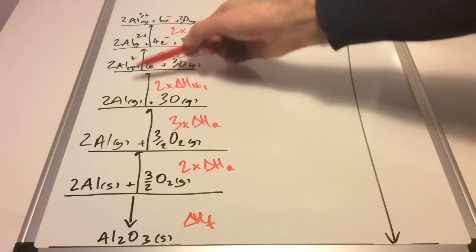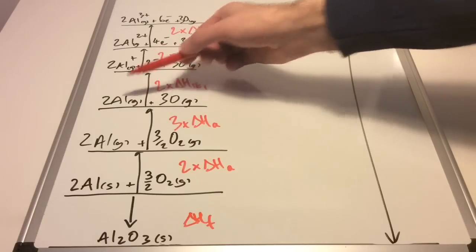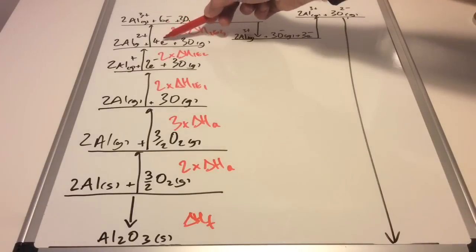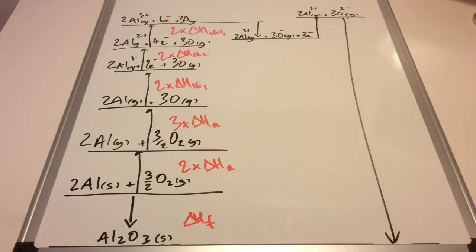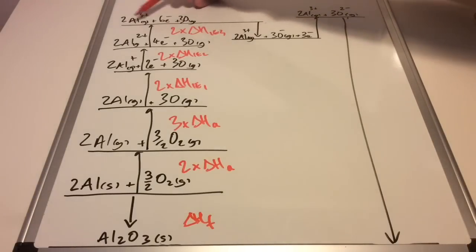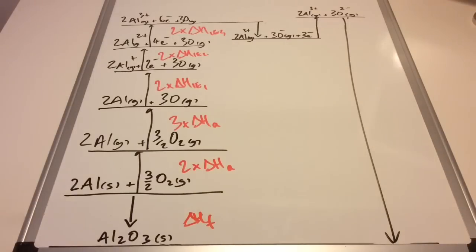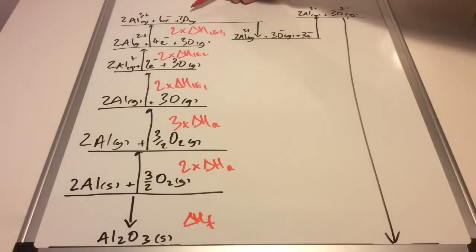In the cycle we've got two moles of aluminium, so we get two electrons coming off, one for each aluminium. That would then go up to four, and then that would go up to six. Now we've got the aluminium in the form that we need: gaseous ions to perform the lattice enthalpy.